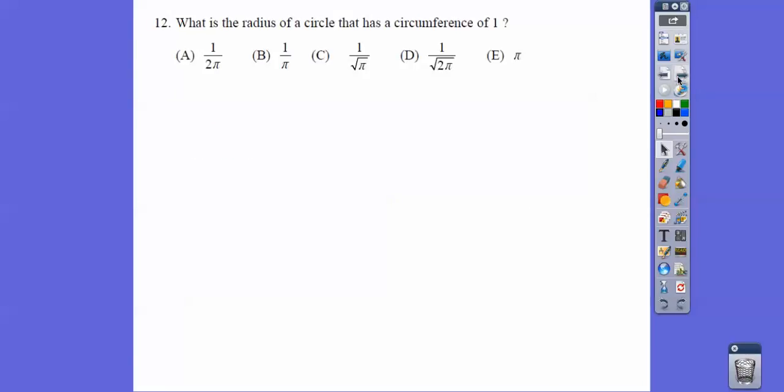All right, what's the radius of a circle that has circumference of one? Circumference is 2 pi R. Remember, that's given to you. They give you those formulas at the beginning of this test. When you divide this by 2 pi and this by 2 pi, we get choice A.